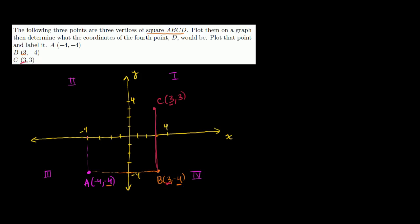Now we have to figure out the last point. Point D needs to be on the same vertical as A, so it has the same x value: negative 4. And it needs to be on the same horizontal as C, so it has the same y value: 3. So point D is at negative 4, 3 — right above A and directly to the left of point C. And we are done.